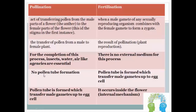Pollination has no pollen tube formation. While in fertilization, a pollen tube is formed which transfers the male gamete to the egg cell, and it occurs inside the flower's internal mechanism.